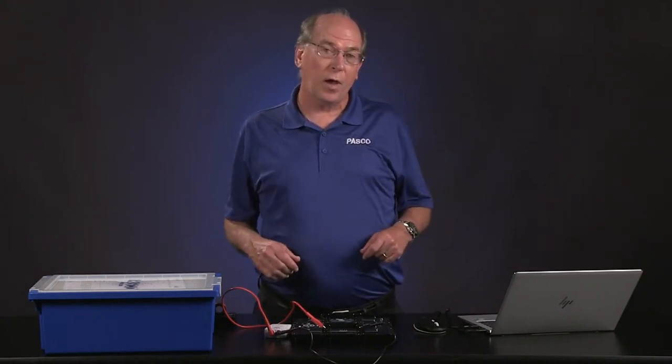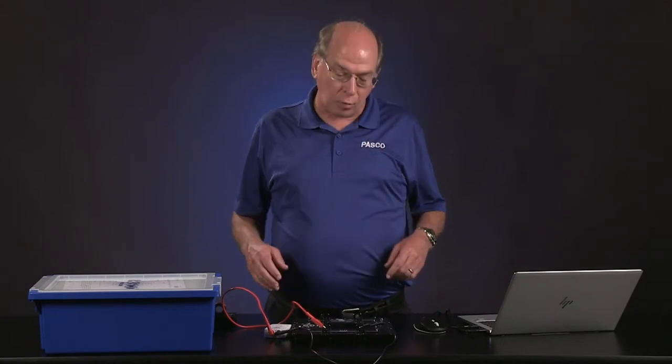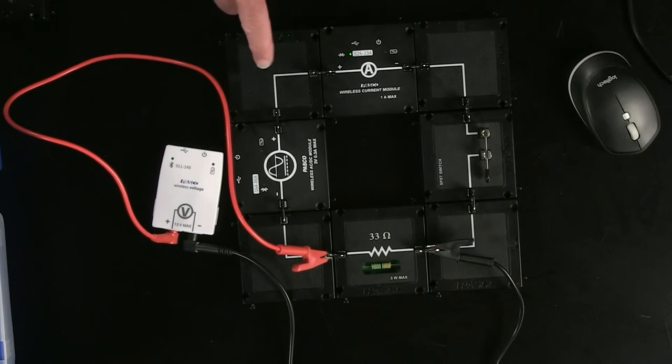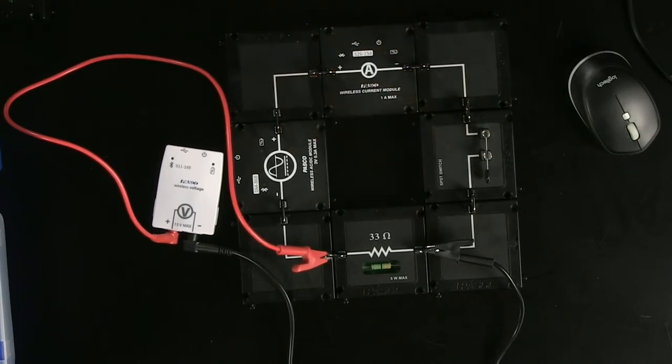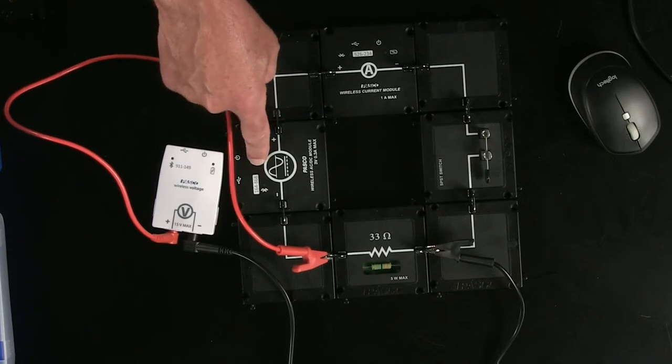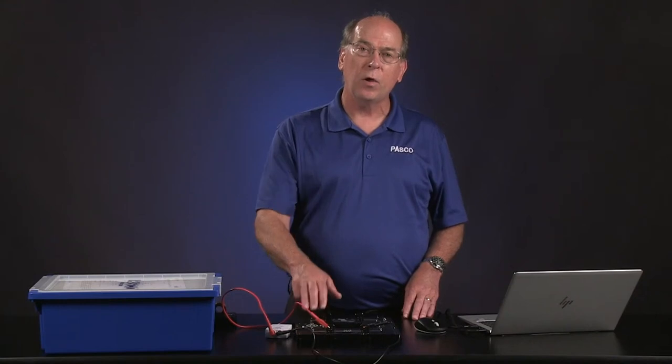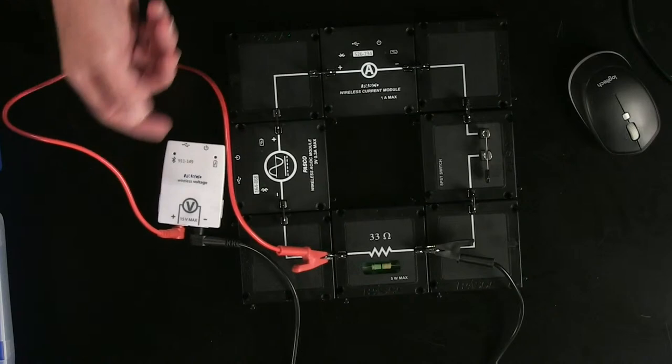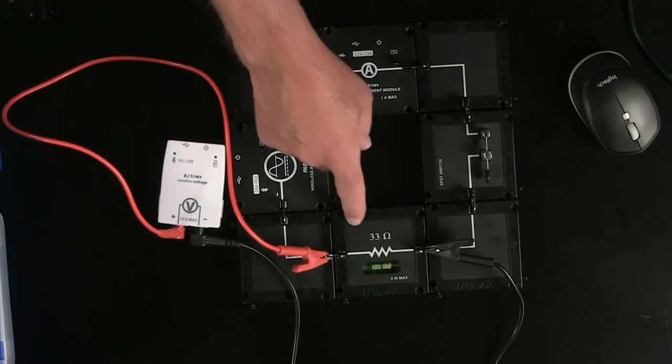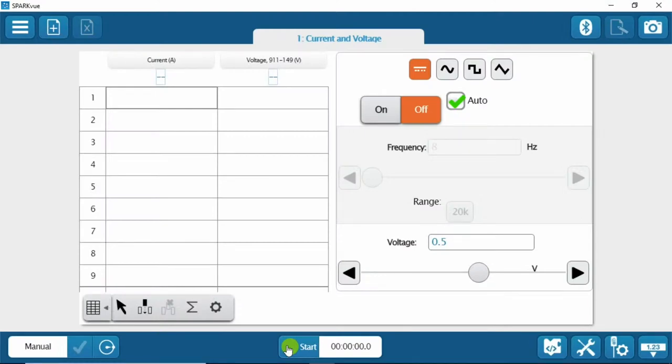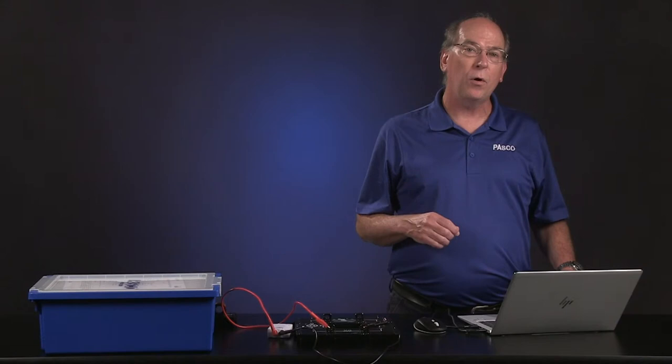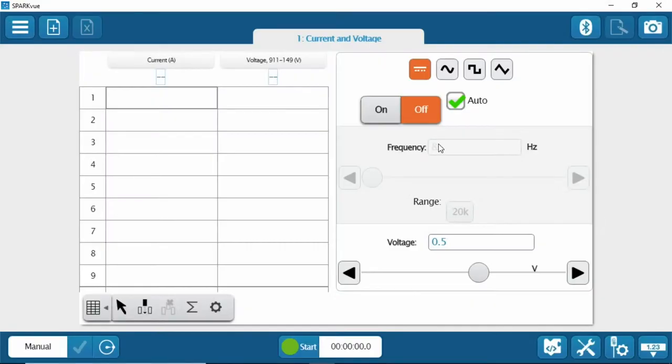I'm going to model for you what I might be doing with my students if I was still in the classroom trying to use distance learning. So I have a circuit set up with modular circuits. I've got some wire modules. I've got the wireless current module to measure the current in the circuit, the switch. I've got a 33-ohm resistor. And then something JJ didn't talk about, the wireless AC-DC module. No battery. I'm using that as a wireless power supply. And so I've connected the wireless voltage sensor across the resistor so I can measure the voltage across the resistor and the current through it simultaneously. The sensors and the wireless AC-DC module are hooked up to our software SparkVu, which is a free download for tablets and phones.